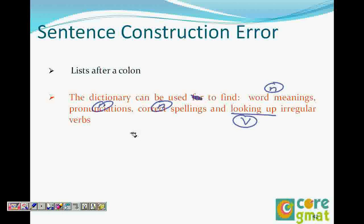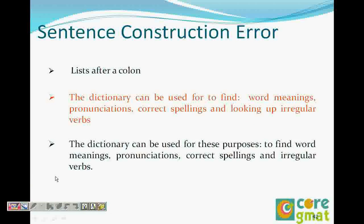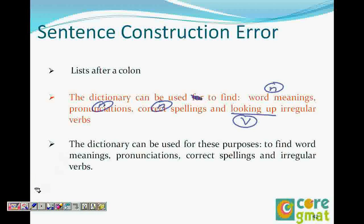To correct it: 'The dictionary can be used to find word meanings, pronunciations, correct spellings, and irregular verbs.' We cannot write 'to look up irregular verbs' because 'to look up' is also a verb form. Just 'irregular verbs' as a noun is correct. So the corrected sentence has noun, noun, noun, noun — all parallel.